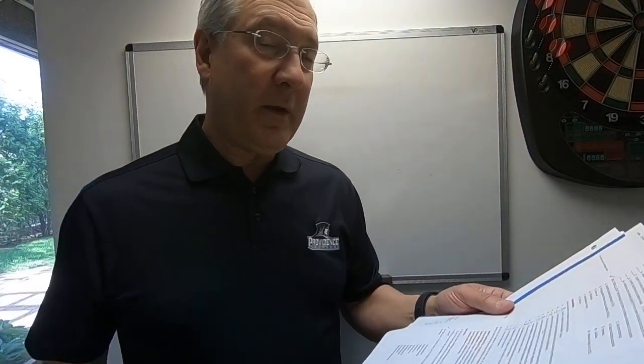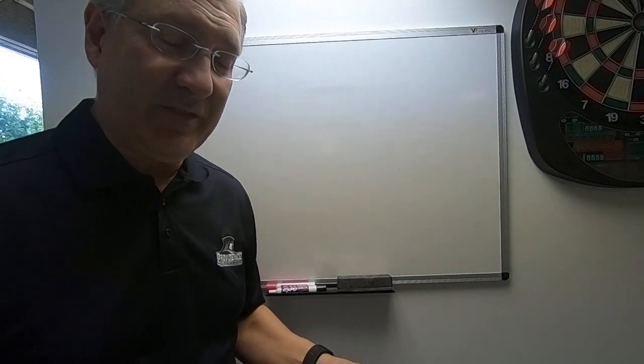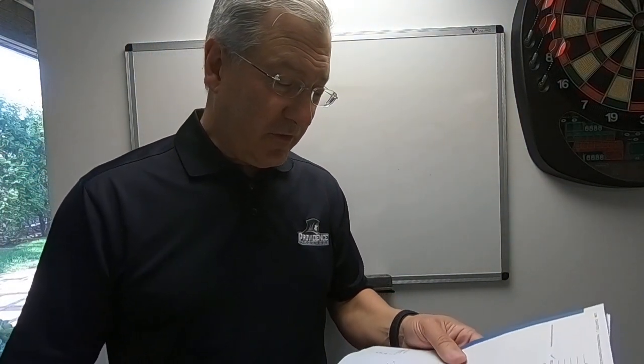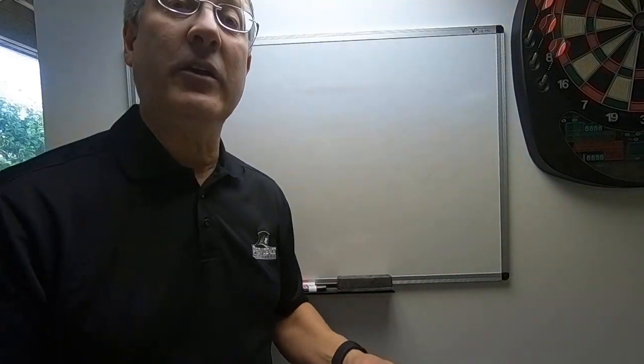Moving along to exercise E1.4, here we want to identify what type of account each item is — whether it's an asset, a liability, stockholders' equity, revenue, or expense. That's important because it tells you where it goes when preparing a financial statement.